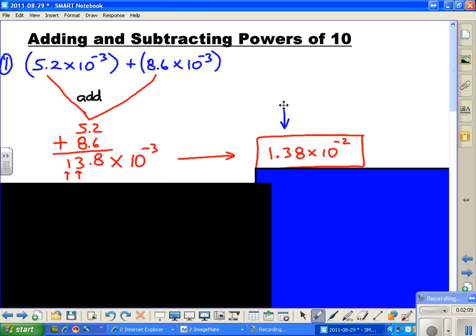We can prove this to be correct simply by taking our 1.38 times 10 to the minus 2 and making that into a number with no powers of 10. The minus 2 is going to take us to the left 1, 2 times.